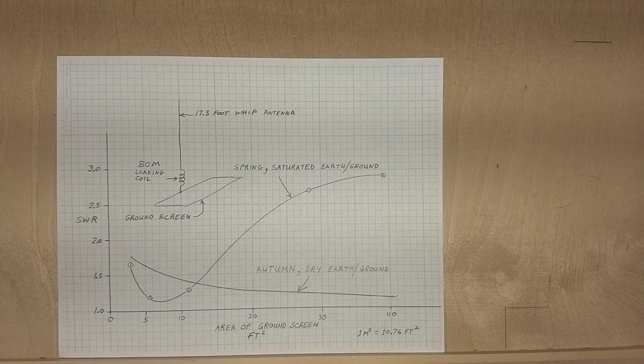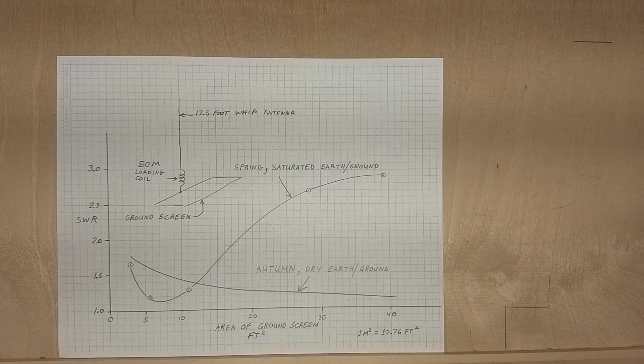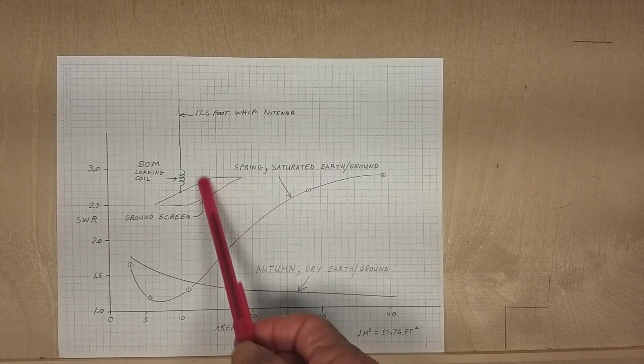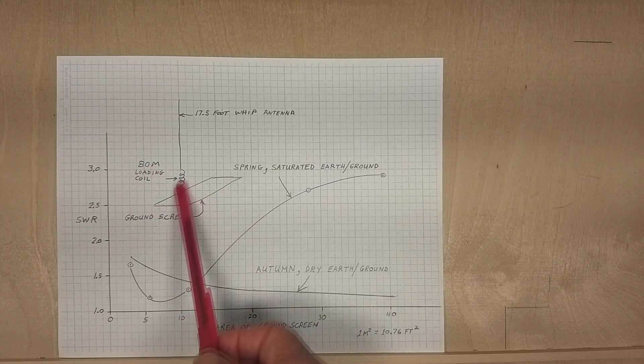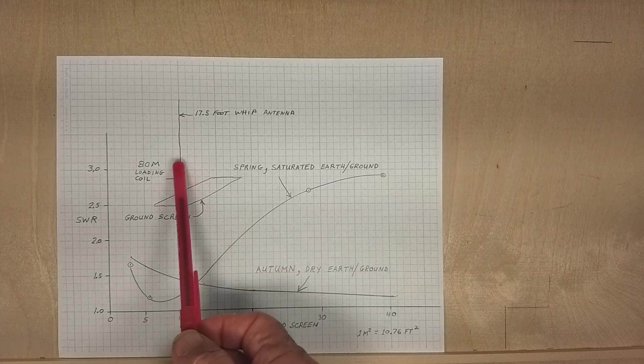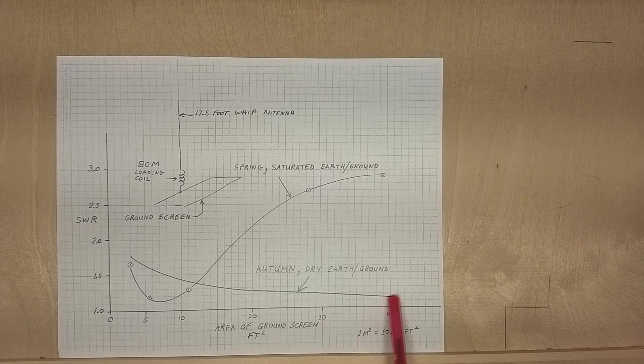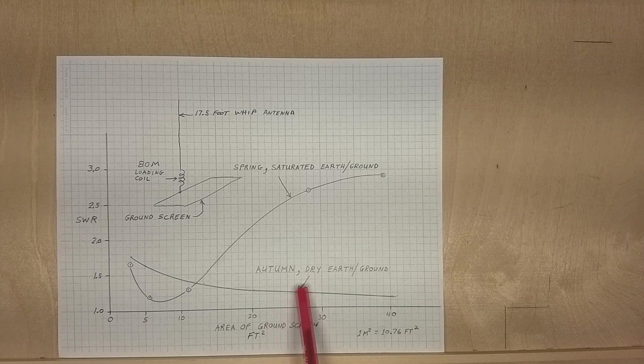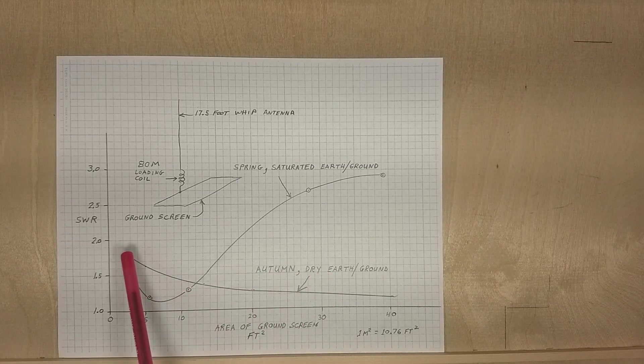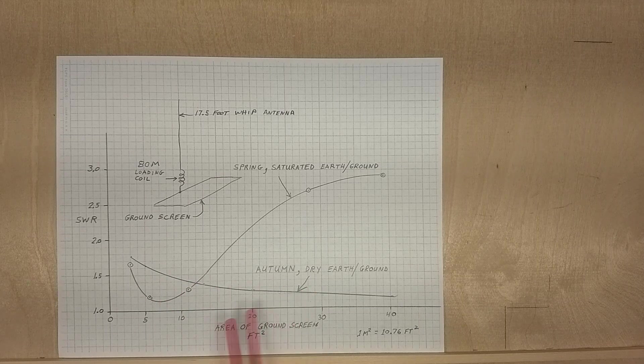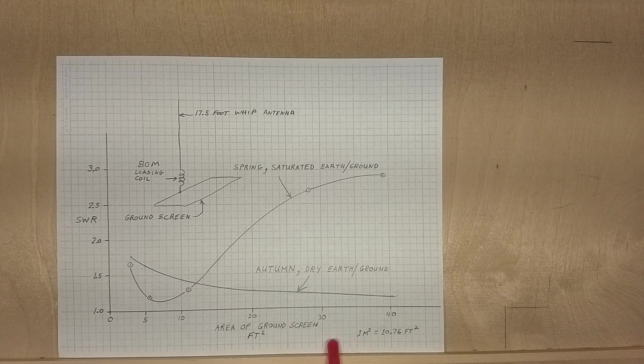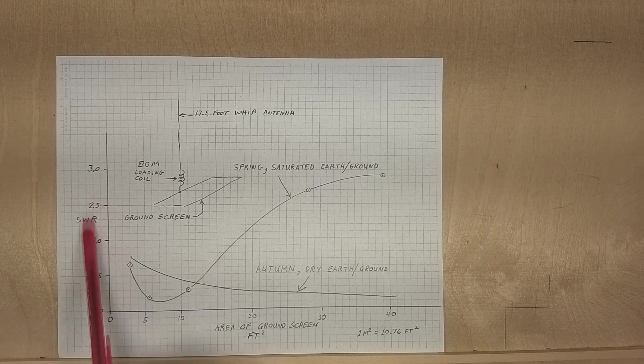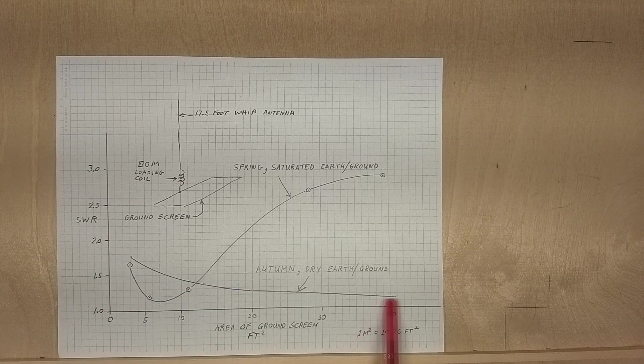Here's the graph of the data that I just showed on the whiteboard. This is our setup: we had a ground screen, an 80-meter loading coil, and then a 17-foot whip. This bottom line is the curve from the fall when the earth was dry. That curve showed that the more area—by the way, this is the area down here in square feet—the more the area, the better the SWR, the lower the SWR becomes.